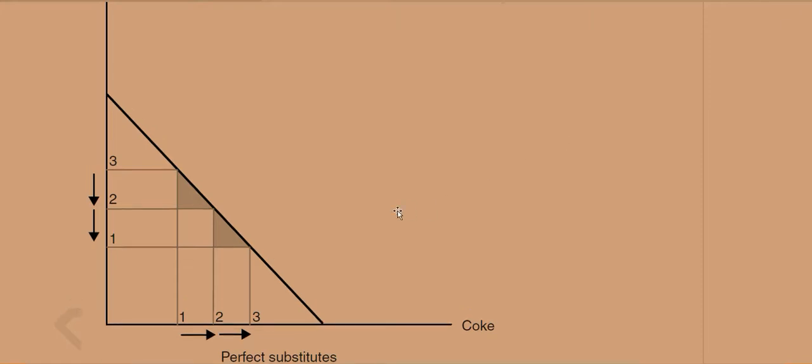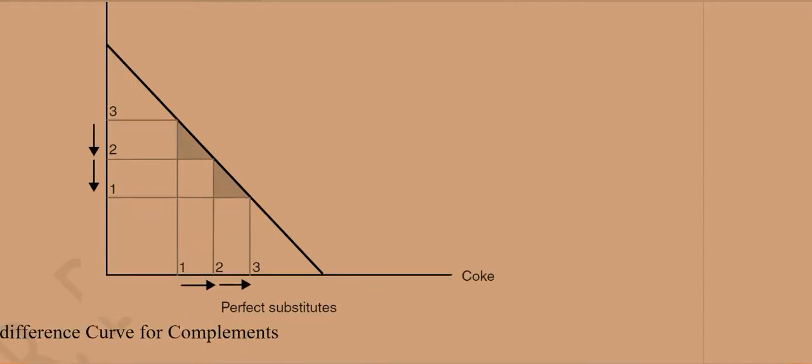So if this is the situation, the indifference curve will not be a curve, it will be a straight line, because we can have one more Coke instead of one Pepsi. The substitution is one divided by one, so the curve is not there, it's a straight line. This is why we call them perfect substitutes.